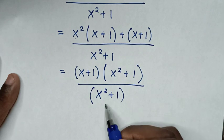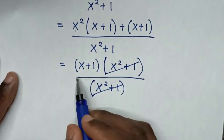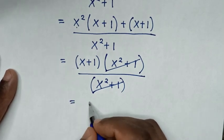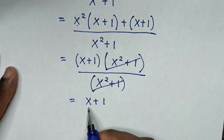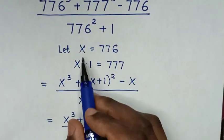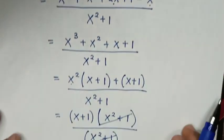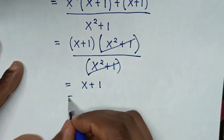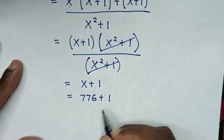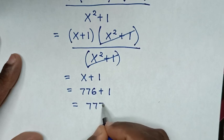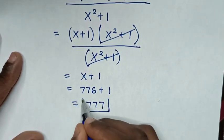Now, to simplify: x square plus 1 will cancel each other, so it will be equal to x plus 1. But recalling that we let x equal to 776, so it will be equal to 776 plus 1, which is equal to 777. Therefore, this is our final answer.